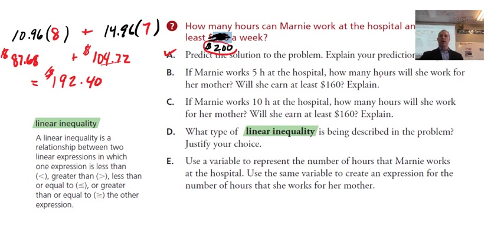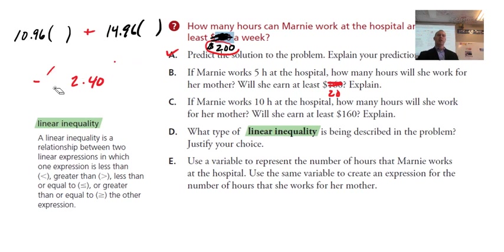Let's take a look at B here now. If Marnie works five hours at the hospital, how many hours will she work for her mother? Will she earn at least this $200? So we did 5 and 10 at the beginning. And we found that she did make over $200. So notice what we're doing here. We're replacing values for the number of hours at each. So what's staying the same is the wage, what she would make per hour. What's changing or what's varying would be the number of hours at the hospital, the number of hours with her mom. And of course, what are we comparing? We're comparing this to the $200 in the question. That has to be more than or equal to what? $200. That's the goal.